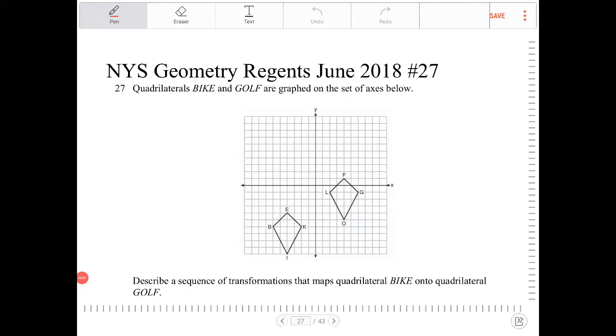Quadrilaterals B-I-K-E and G-O-L-F are graphed on a set of axes below. Describe a sequence of transformations that maps quadrilateral B-I-K-E onto quadrilateral G-O-L-F.